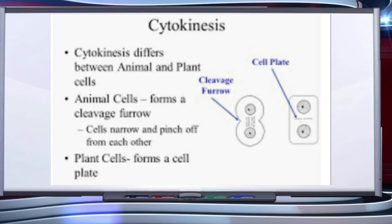In animal cells, there is a formation of a cleavage furrow which starts from the periphery and completes in the center of the cell, forming two daughter cells. In plant cells, there is a formation of a cell plate. In some organisms, karyokinesis is not followed by cytokinesis, resulting in a multinucleated condition. A good example of this is the liquid endosperm in coconut.